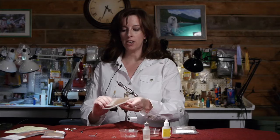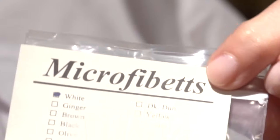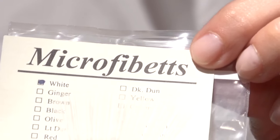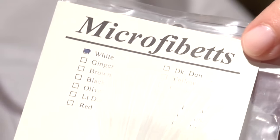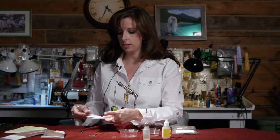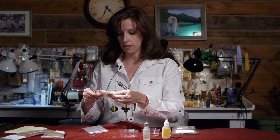I'm going to use microfibits for the tail. These are white colored. They're basically a mayfly tail. I need two fibits for the tail. I'll snip them off here.